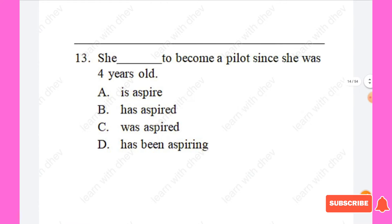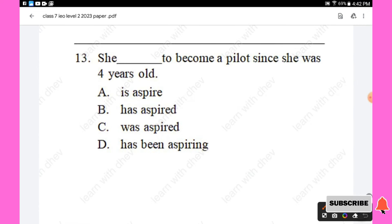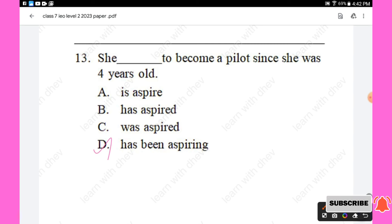Question 13: She — to become a pilot since she was 4 years old. Options are: is aspired, has aspired, was aspired, has been aspiring. The right answer is 'has been aspiring' — she has been aspiring to become a pilot since she was 4 years old. Option D is the right answer.